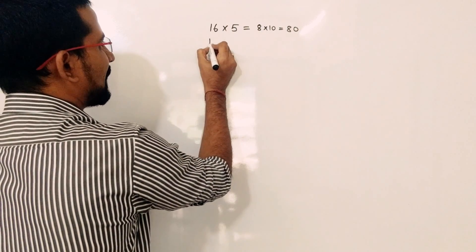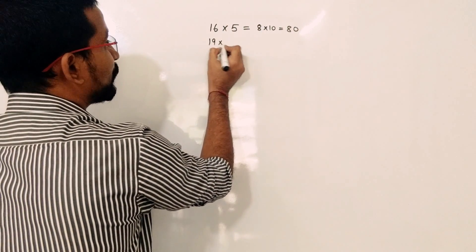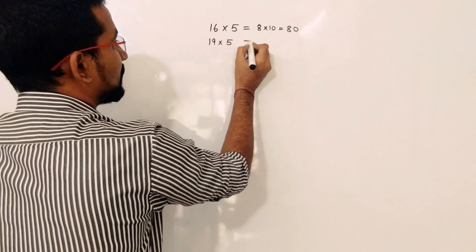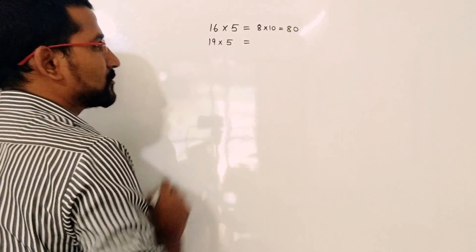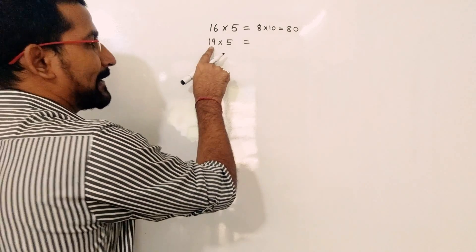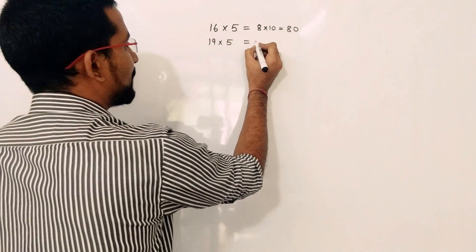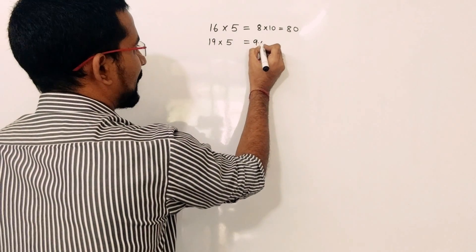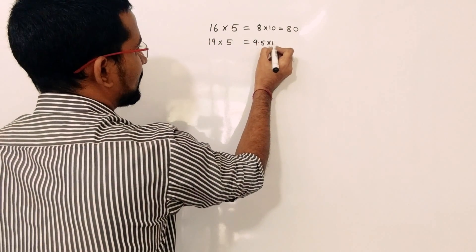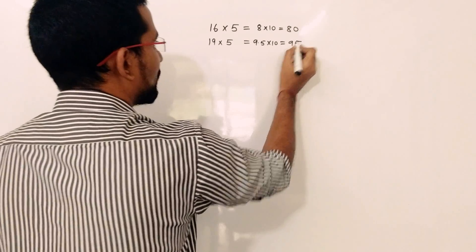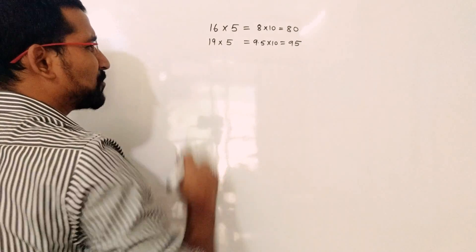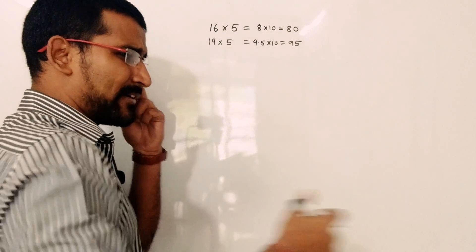Now we will take one more example: 19 into 5. So 19 divided by 2 is 9.5, then multiply by 10, so the answer is 95. So these are the smaller values.